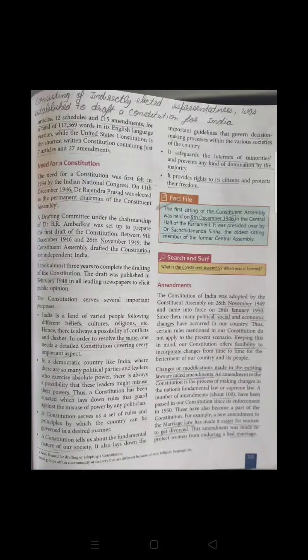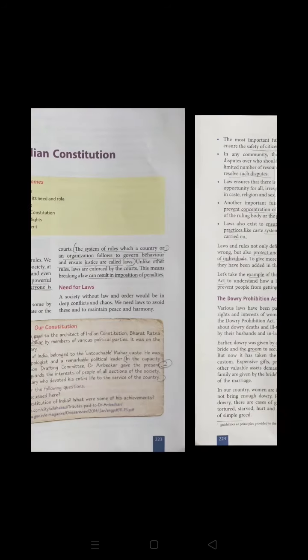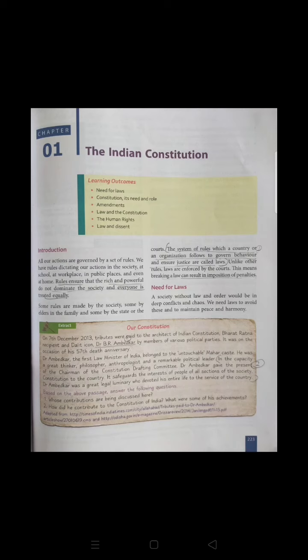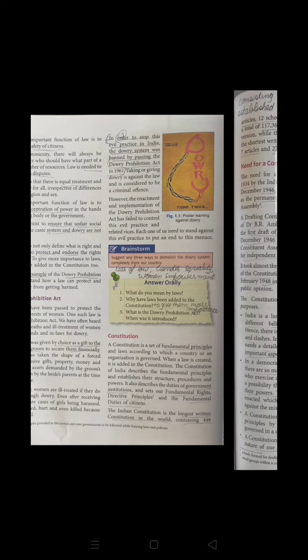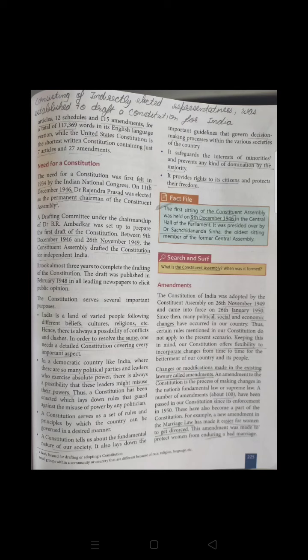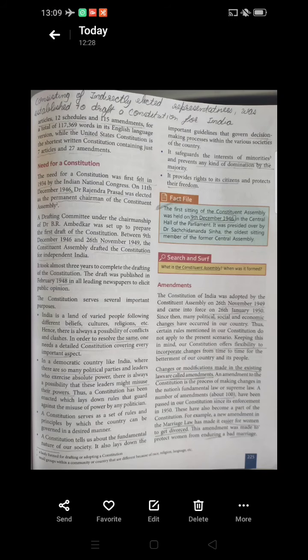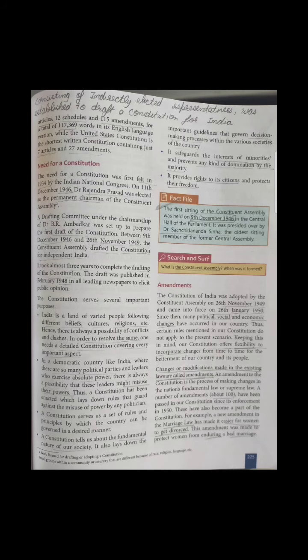Hello students, hope you had already watched the first part of this chapter. In the first part, we discussed about our Indian Constitution, what is law and why there is a need of law. We took the example of the Dowry Prohibition Act and how this act saved women. We discussed constitution making, the longest constitution being of India, the shortest of United States, and BR Ambedkar as the father of our constitution. The drafting committee met on 29th August 1947, headed by BR Ambedkar.